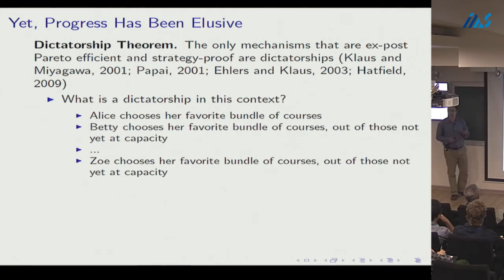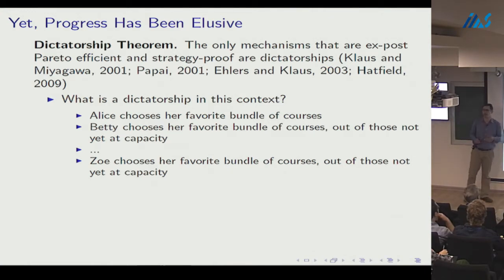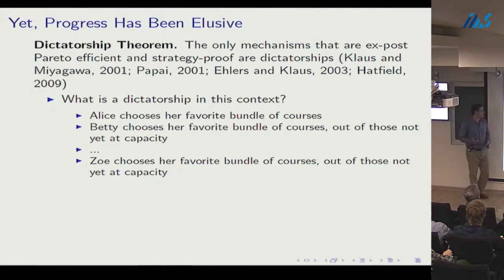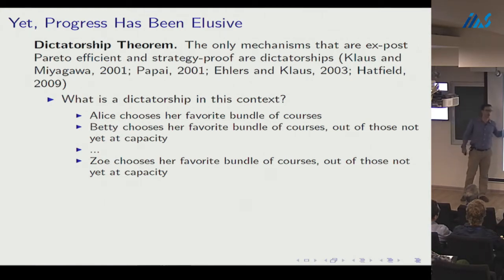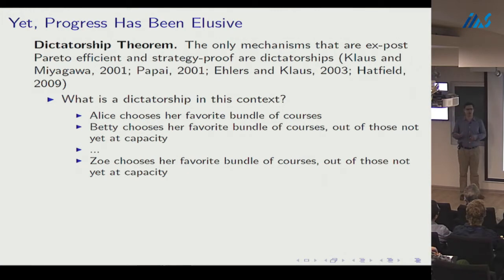In a dictatorship, students are lined up in order: Alice goes first and chooses her favorite bundle of courses, Betty goes second and chooses her favorite bundle from those not yet at capacity, and so on until poor Zoe is forced to choose from just the leftovers.